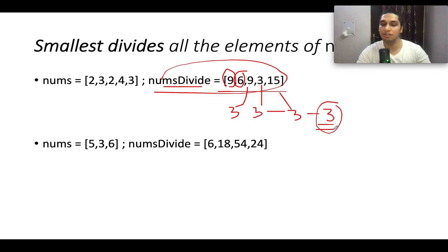The answer, the smallest number that divides all the elements, could be either 3 or a factor of 3. In this case, it would be 3 itself.